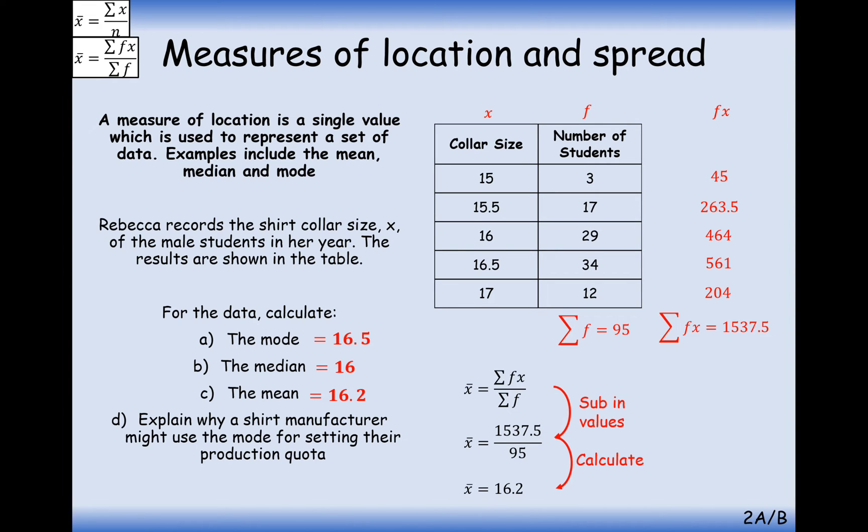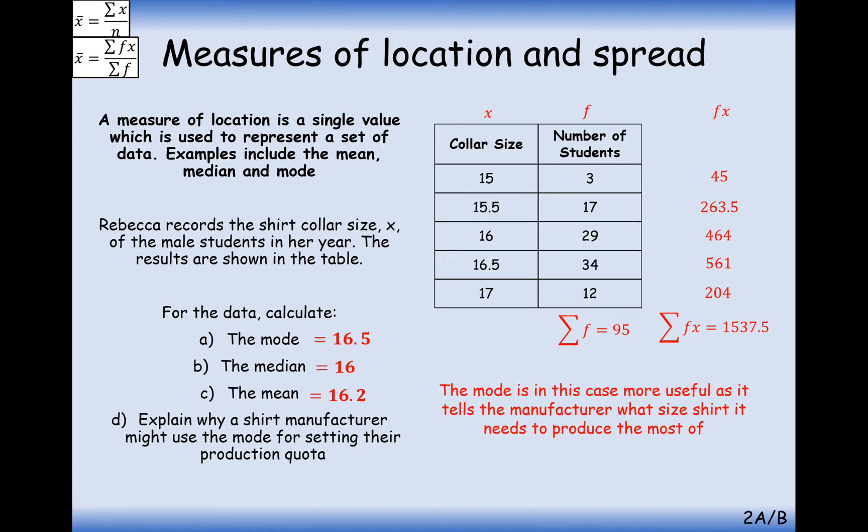Explain why a shirt manufacturer might use the mode for setting their product quota. Well, in this case here, they're not going to be concerned about getting a shirt size of 16.2, because people range in shirt sizes or collar sizes. What they're going to be interested in is which shirt or which collar size is more popular with their customers, and that will be the 34 value. Okay, so the mode in this case is more useful, as it tells the manufacturer what size of shirts it needs to produce the most of.